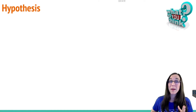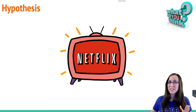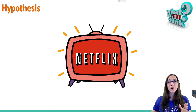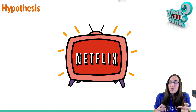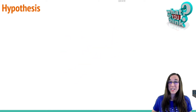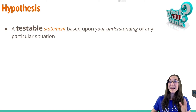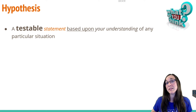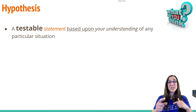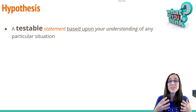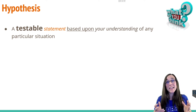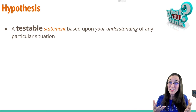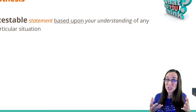I have a bone to pick with this hypothesis thing. If you've seen pretty much any Netflix series, you've heard the word 'theory' used incorrectly in place of 'hypothesis.' Every time I hear that, I cringe. A hypothesis is a testable statement based on your understanding of a particular situation. In contrast, a theory is something that's been tested over and over again and has stood the test of time. Gravity is a theory because we've tested things falling to the earth for hundreds of years — it is no longer considered a hypothesis.